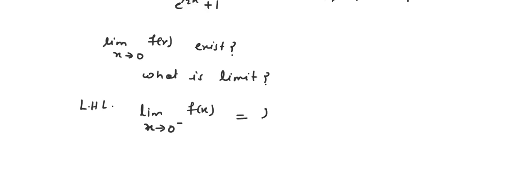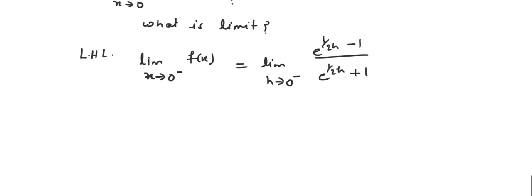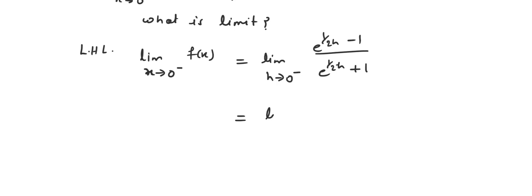We can write this as limit as h tending to 0 from the negative side of the function e^(1/2h) - 1 upon e^(1/2h) + 1. Or we can write it as limit h tending to 0 with h positive, substituting minus h in place of x, so we obtain e^(-1/2h) - 1 upon e^(1/2h·(-1)) + 1, giving e^(-1/2h) - 1 upon e^(-1/2h) + 1.